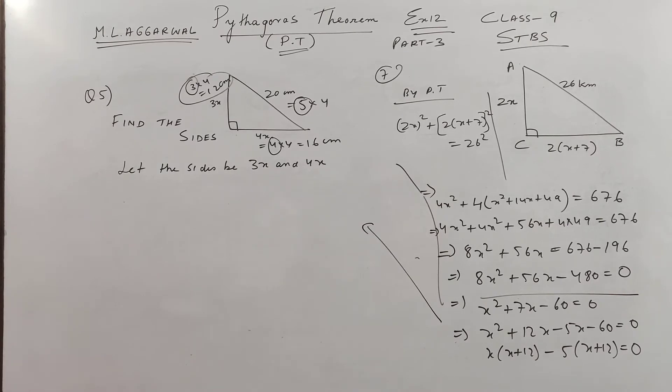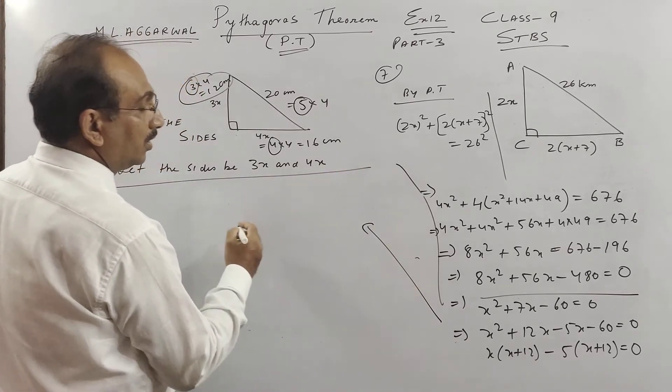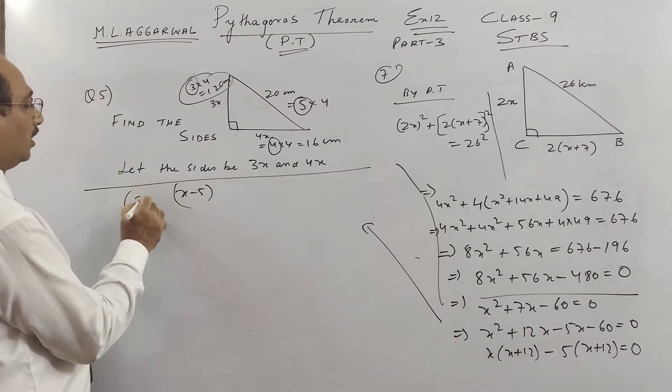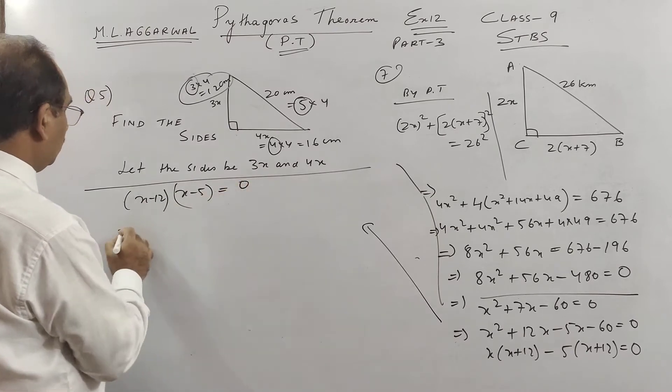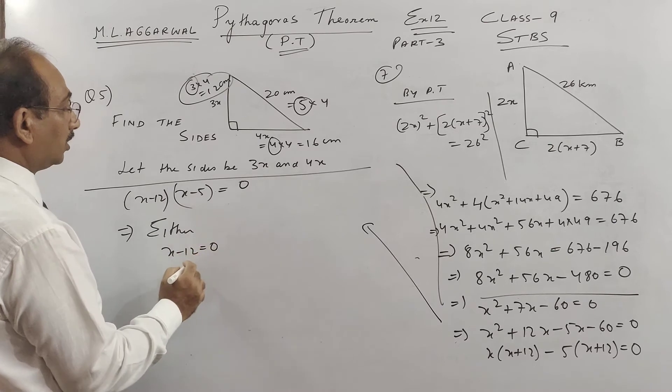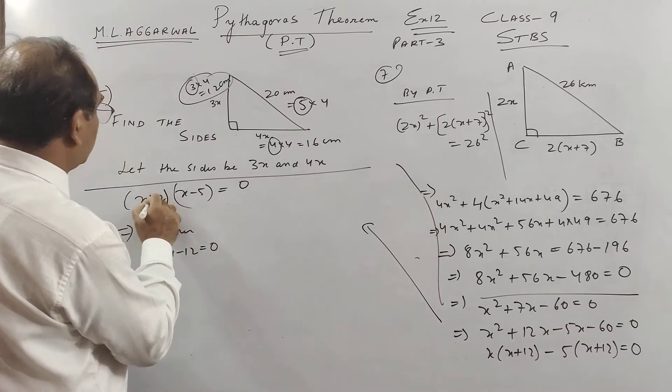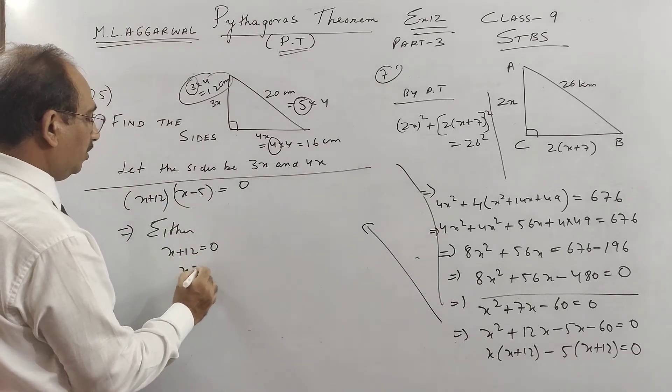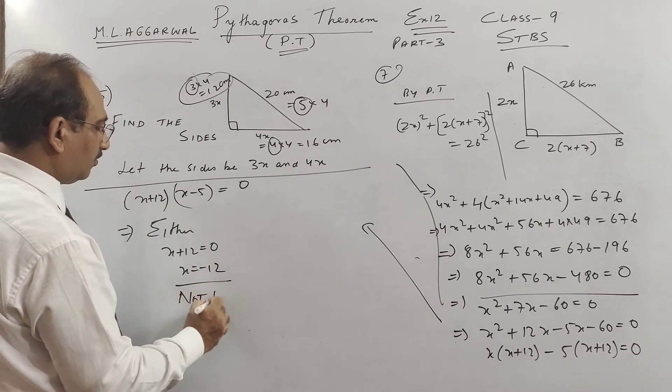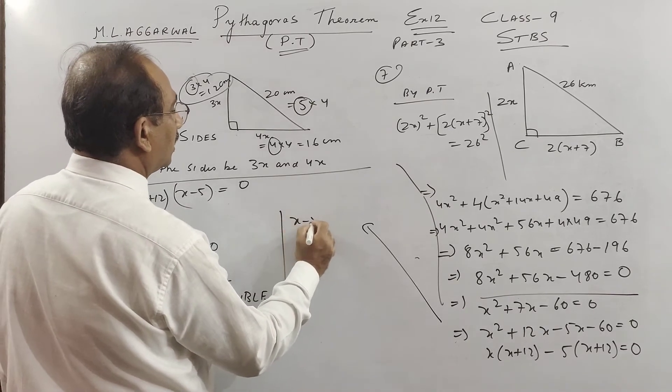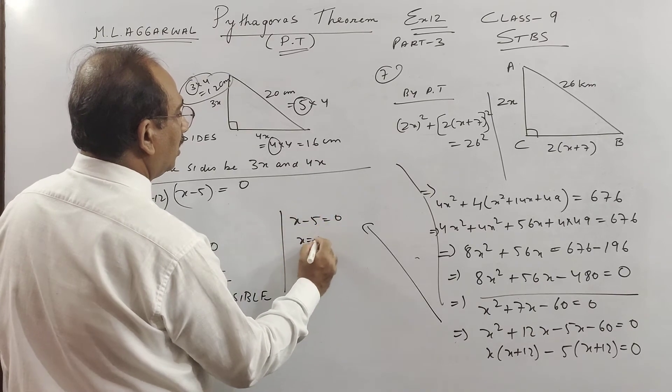So let us see the last part of this question here we come, so x minus 5 take out, x minus 12 this is equal to 0, so we know either this is a quadratic equation x plus 12 is there children, this is also plus, so x will be minus 12 not possible.